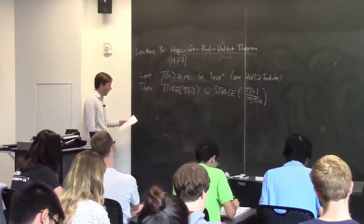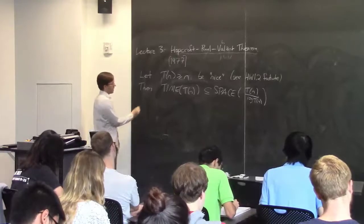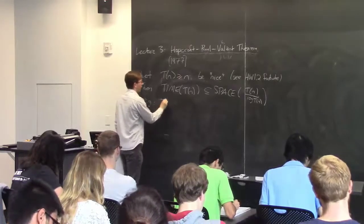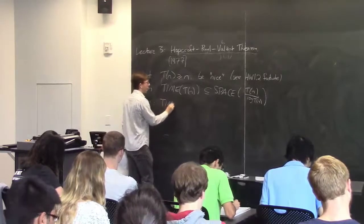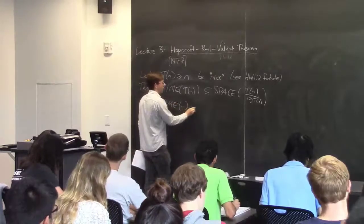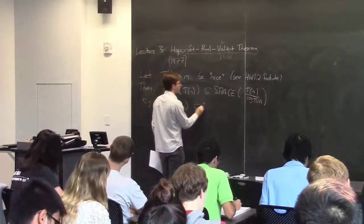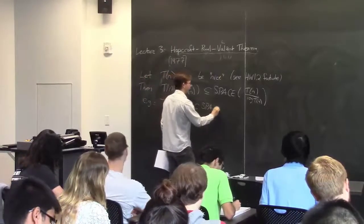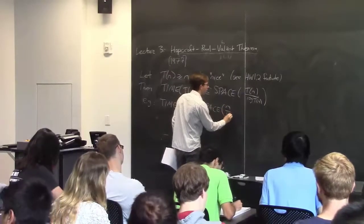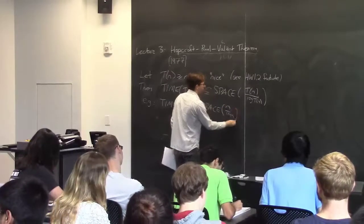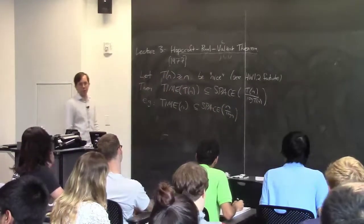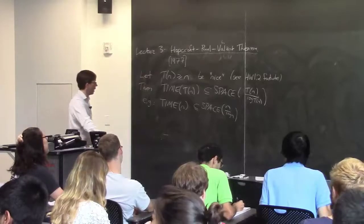The theorem is that anything you can solve in time T, you can also solve in space strictly less than T — notably t(n) / log t(n). If you specialize this to t(n) = n you get that linear time is contained in space n / log n. And this, of course, is on multi-tape Turing machines.